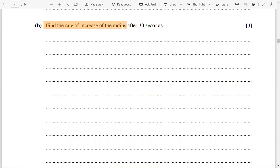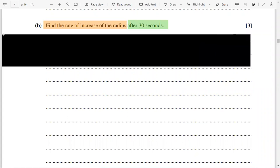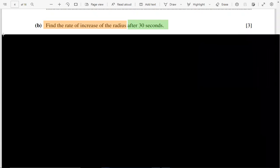It means we have to find change in the radius due to change in time t, because examiner is saying after 30 seconds. So collecting first of all the information of this problem here, dr/dt is required.